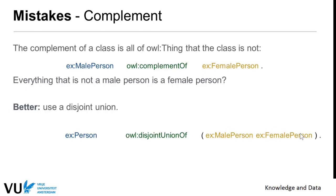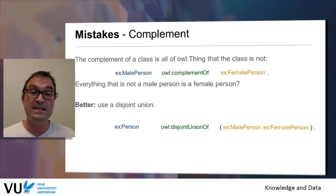A third type of mistake is with the complement. The complement is not the same as disjointness. You might want to say nothing can be both a male person and a female person — those two things are disjointed. But using complement, saying male person is the complement of female person, means everything that is not a male person would be a female person, which is of course not true. The correct approach is to define a superclass Person as a disjoint union of male persons and female persons.